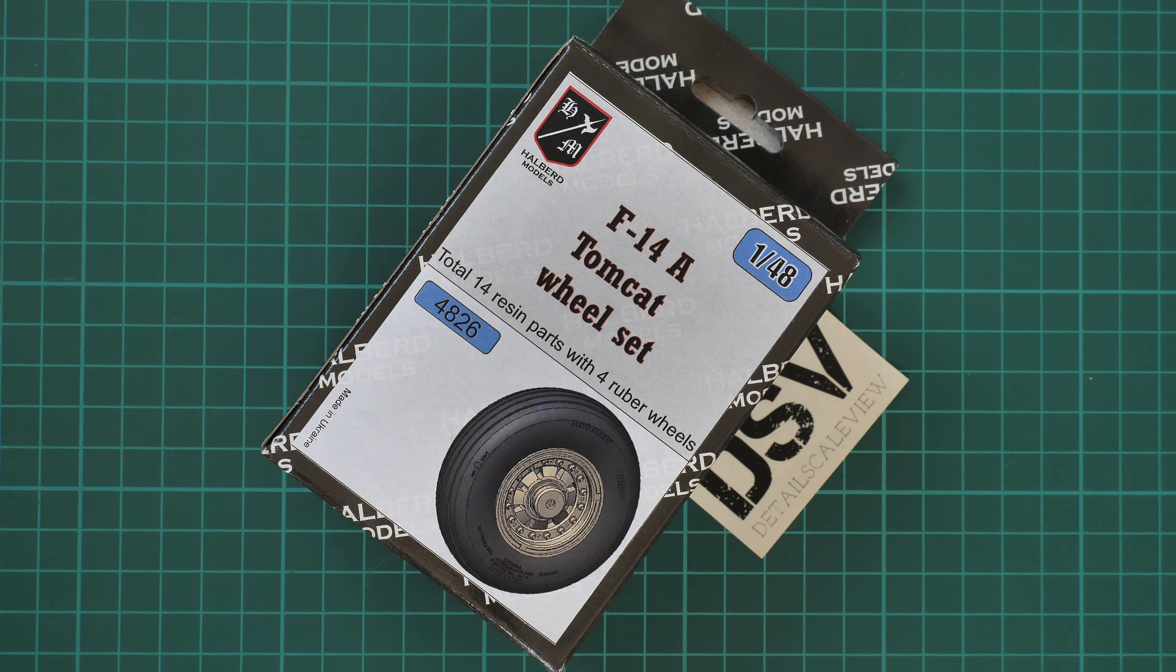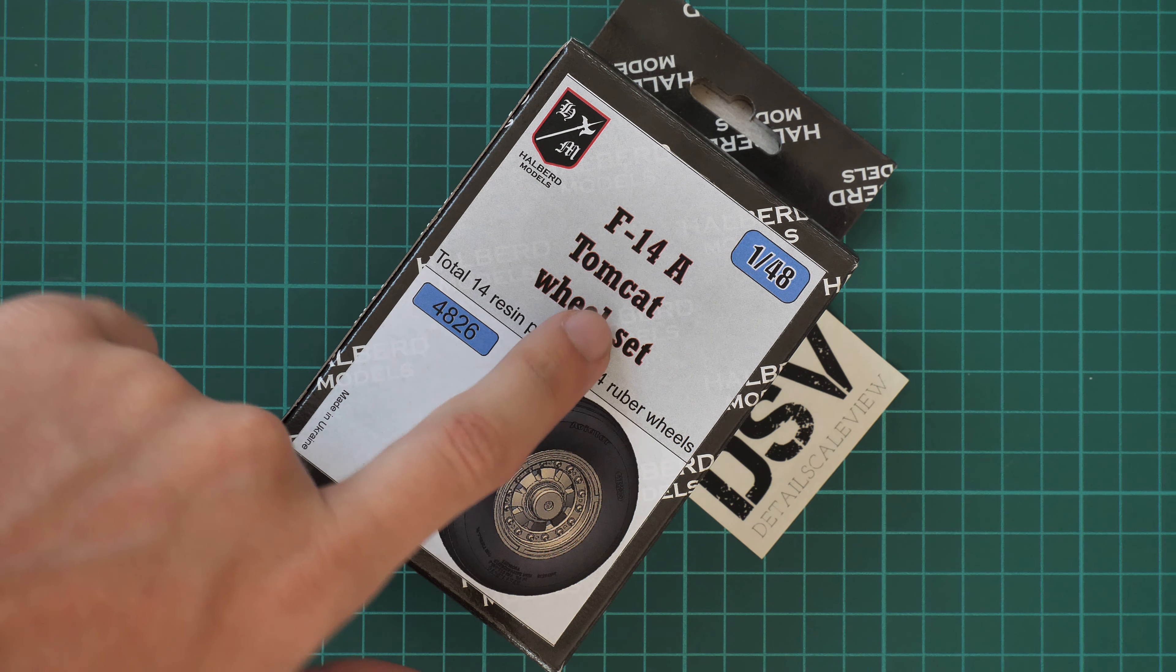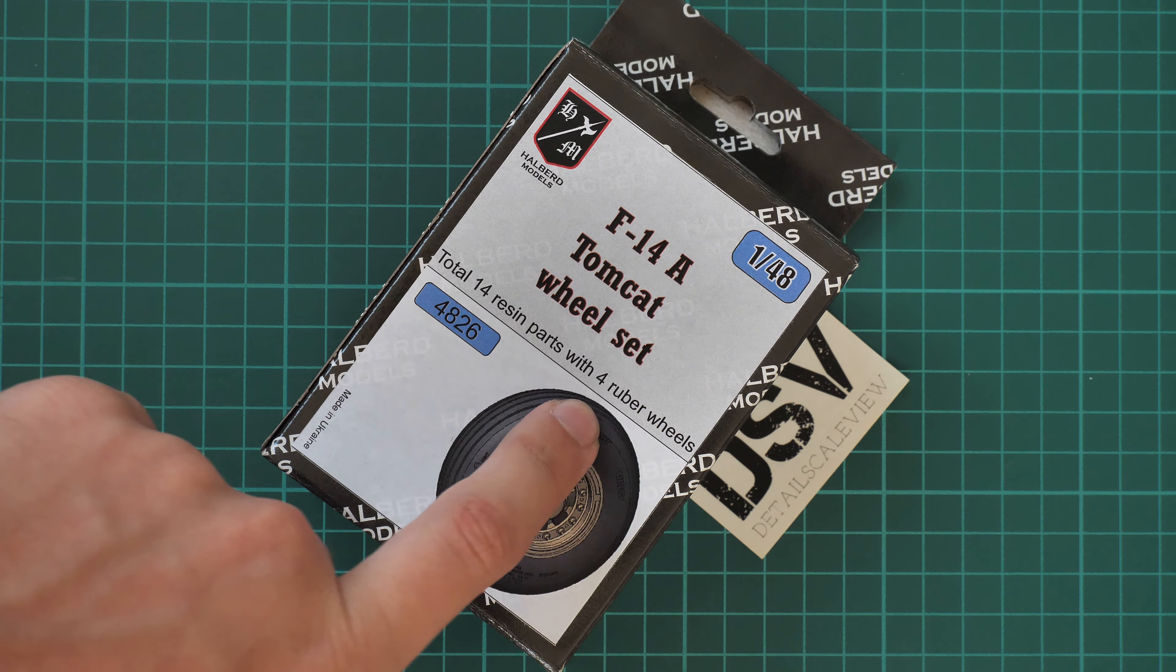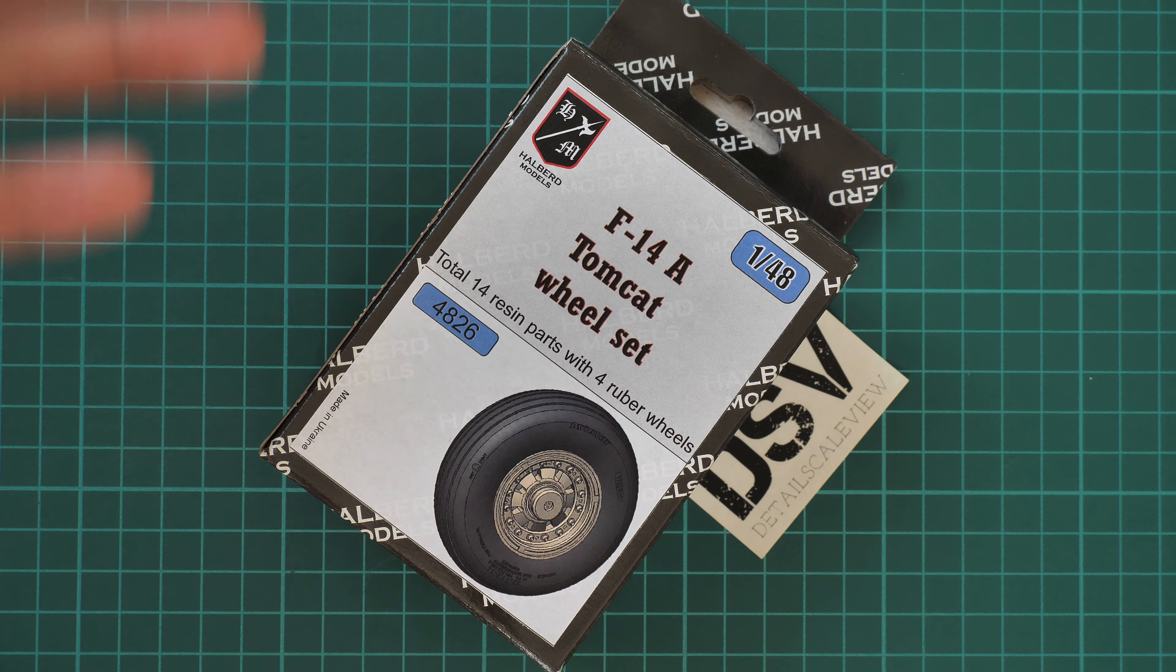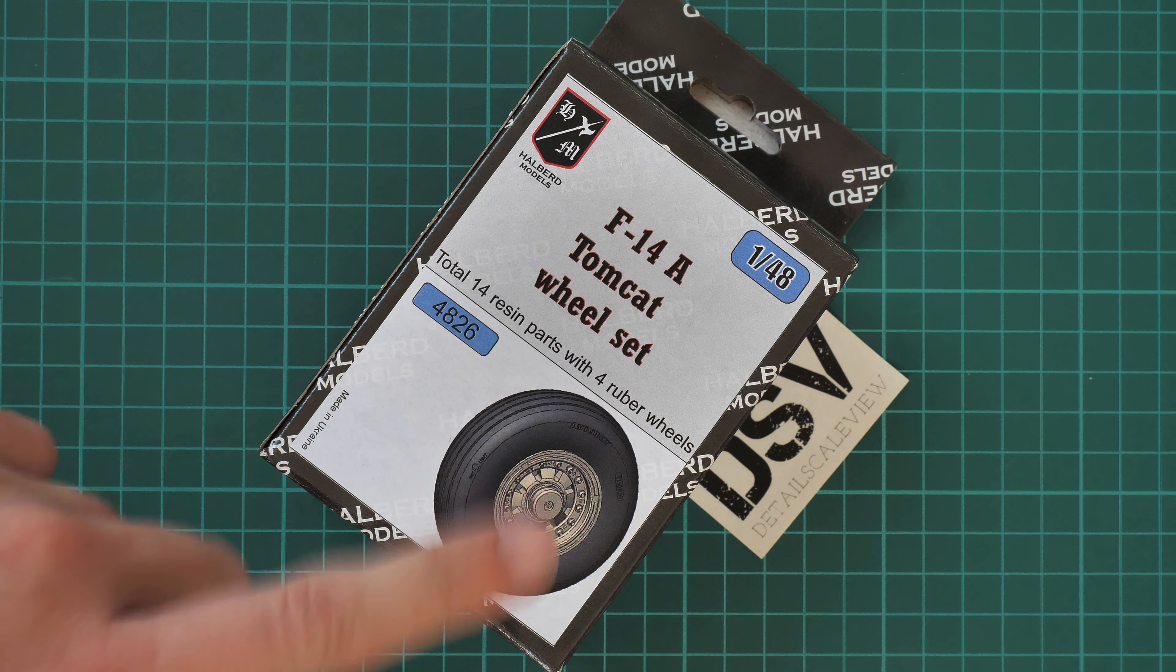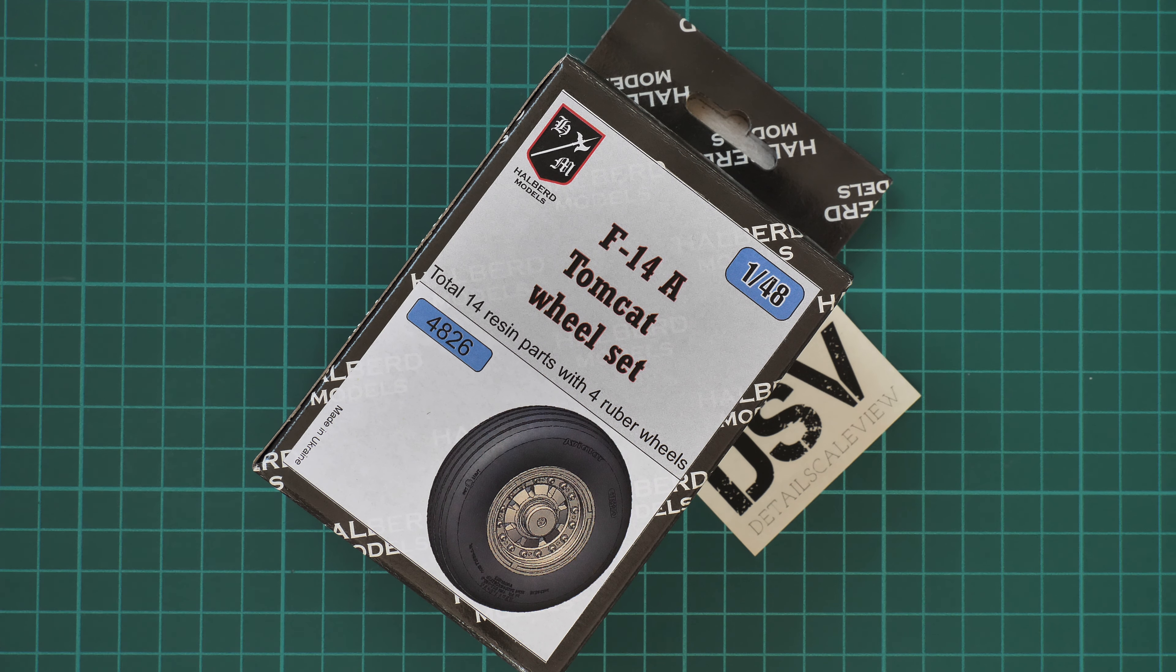It is designed for use with F-14A Tomcat and as you can see there are 14 resin parts with four rubber wheels. In my opinion, this kit might be handy with all recent releases in 1:48 scale which copy the famous Tomcat aircraft, and now we have a quite useful addition to them.